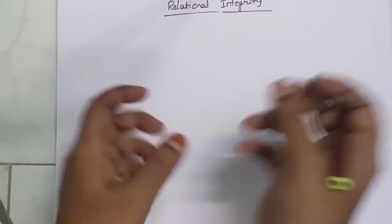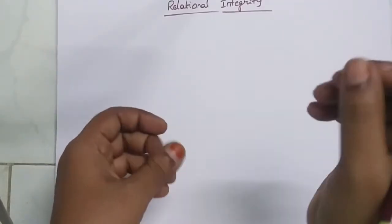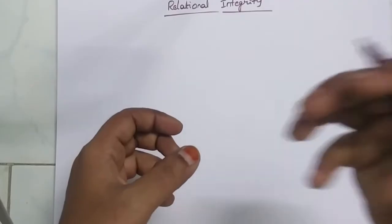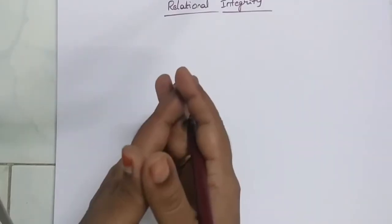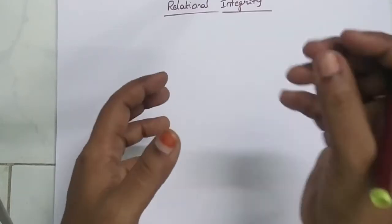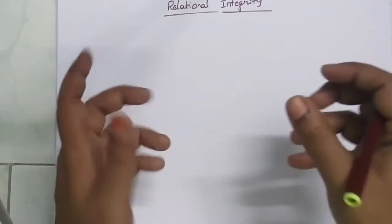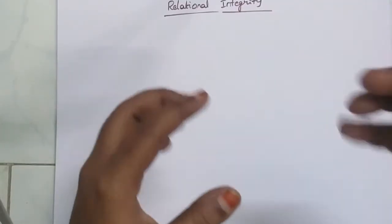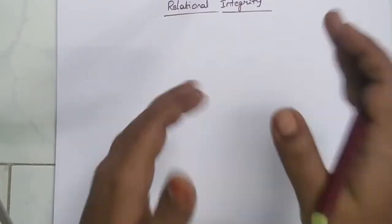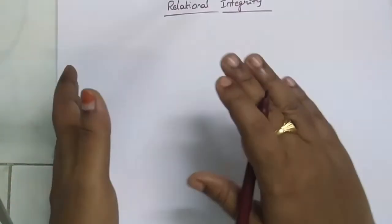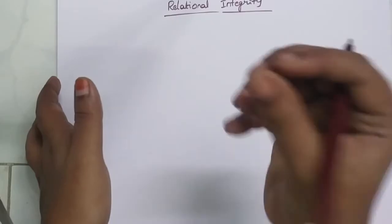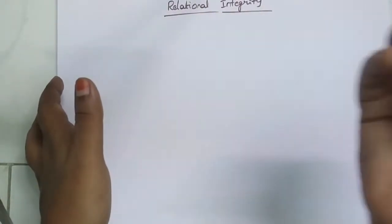Hi students, I am going to talk about relational integrity. So, relational integrity — first, I am going to talk about this database. What is the meaning of integrity? The introduction: each and every data stored into the database is perfect. I am going to talk about correct and unique. Some data has uniqueness and some data does not. The main concept is integrity. Integrity means correctness, completeness and consistency.